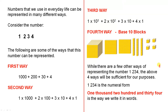While there are a few other ways of representing the number 1234, the above 4 ways will be sufficient for our purposes. 1, 2, 3, 4 is the numeral form. 1234 — that's the part in red — is the way we write it in words.